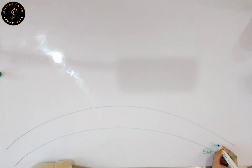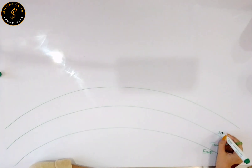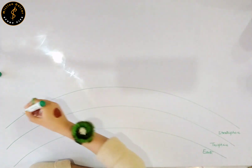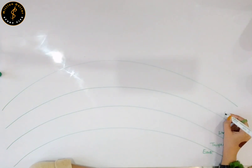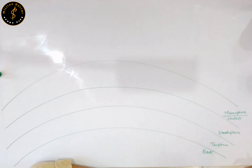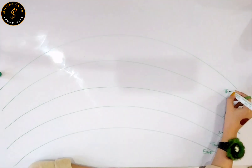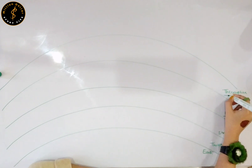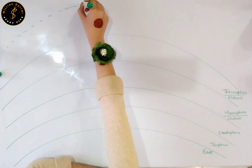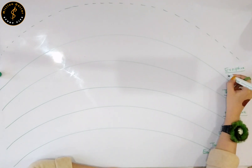This is the troposphere. This is the second layer of your atmosphere called stratosphere. This is the third layer of your planet Earth called mesosphere. This is the coldest layer of your planet Earth. Then we have the fourth layer called thermosphere, and this is the hottest layer. And then we have the exosphere, which is the outermost layer of your planet Earth.